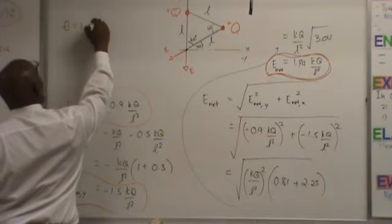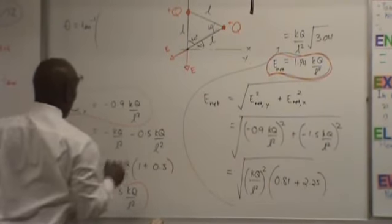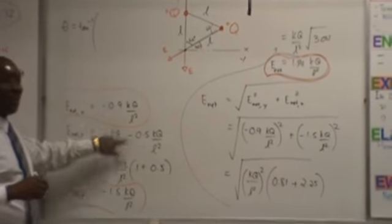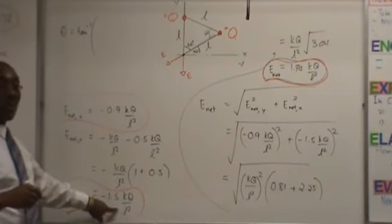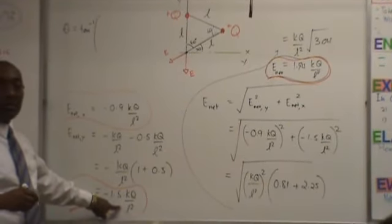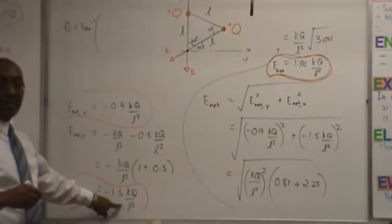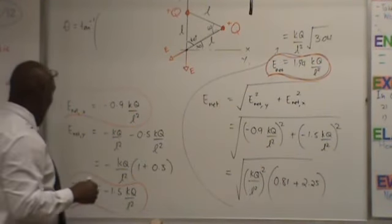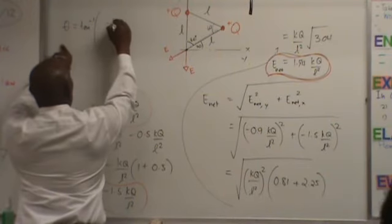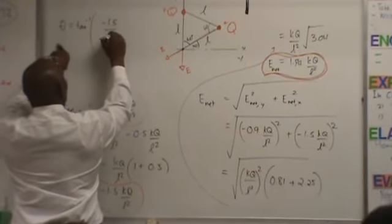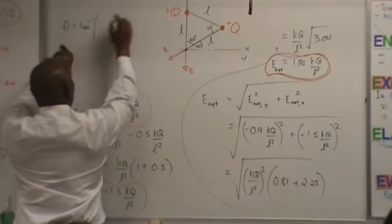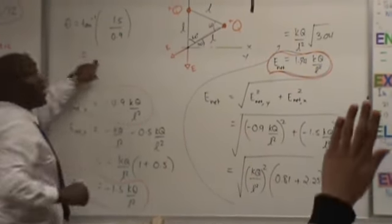Inverse tangent. The good thing about this, when you put these in, these two cancel out, right? KQ over L square cancels out. So you're left with numbers. Do you see that? So I have negative 1.5 divided by negative 0.9, which gives me positive anyways.